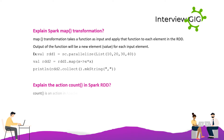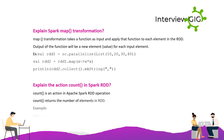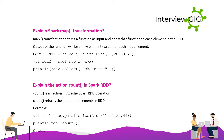Explain the action count in Spark. RDD count is an action in Apache Spark RDD operations. Count returns the number of elements in an RDD. Example: val rdd1 = sc.parallelize(List(11, 22, 33, 44)); println(rdd1.count) — output: 4.